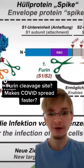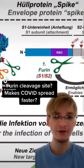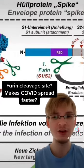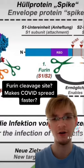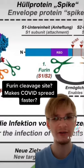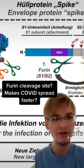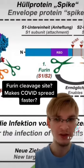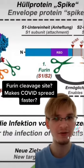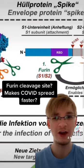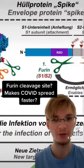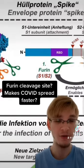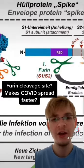So what's all this talk about the furin cleavage site and it being present in SARS-CoV-2, but not in other coronavirus variants? Well, essentially, if we zoom in on the S protein — the protein that the virus uses to attach to our host cell receptors of the SARS-CoV-2 virus —